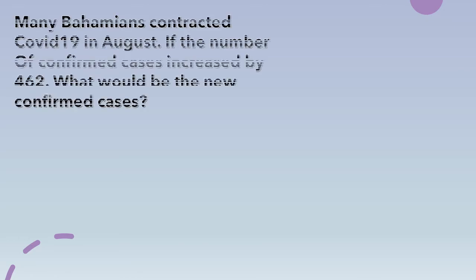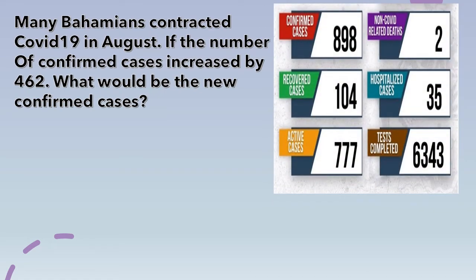The very first thing we do is understand by reading the problem. Many Bohemians contracted COVID-19 in August. If the number of confirmed cases increased by 462, what would be the new confirmed cases? Now I have to ask myself, what am I looking for? I am looking for what would be the new confirmed cases. I will circle my important numbers: 462 and the automatic confirmed cases of 898. Then I will underline my clue word. If you said 'increased,' you are correct.